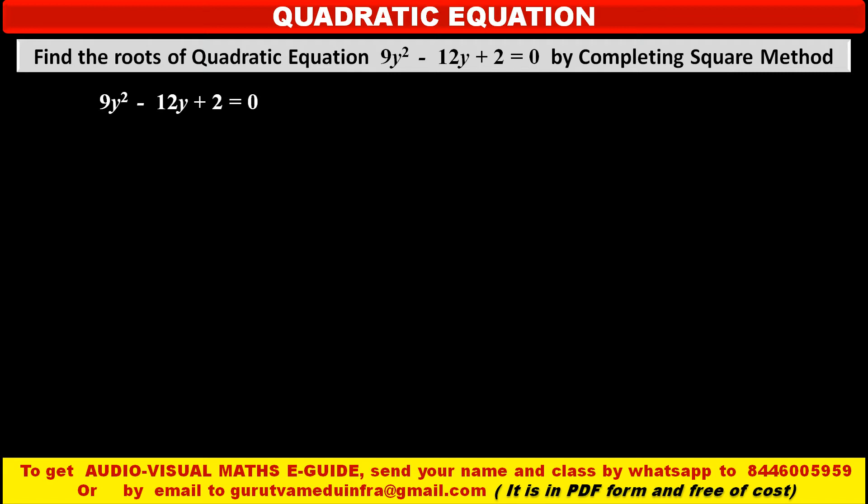Now, to use this method means to make a complete square in the left hand side. It is better if the coefficient of y² is 1 at the place of 9, and we have to shift the constant term to the right hand side to make it easy.